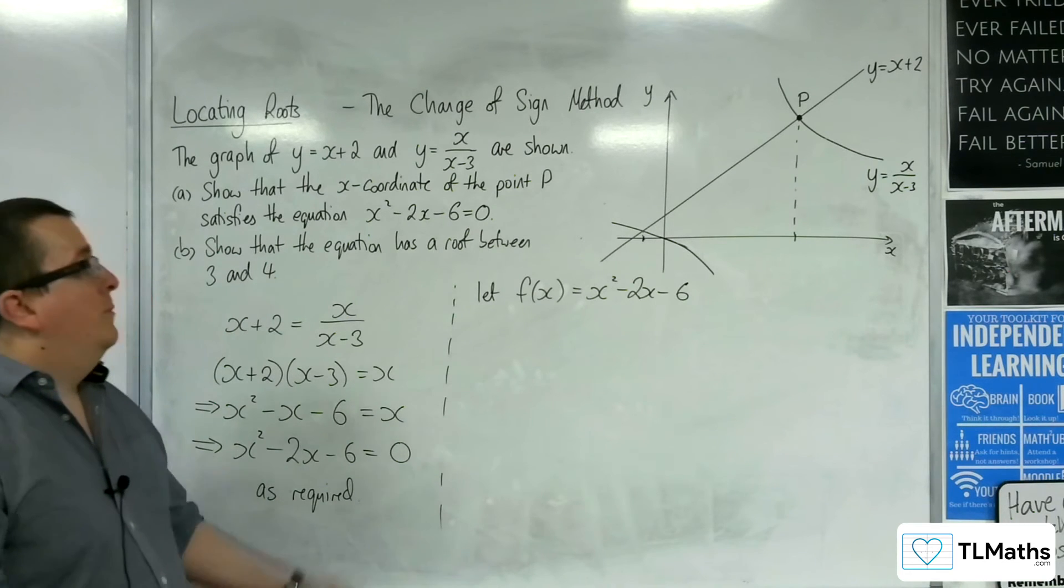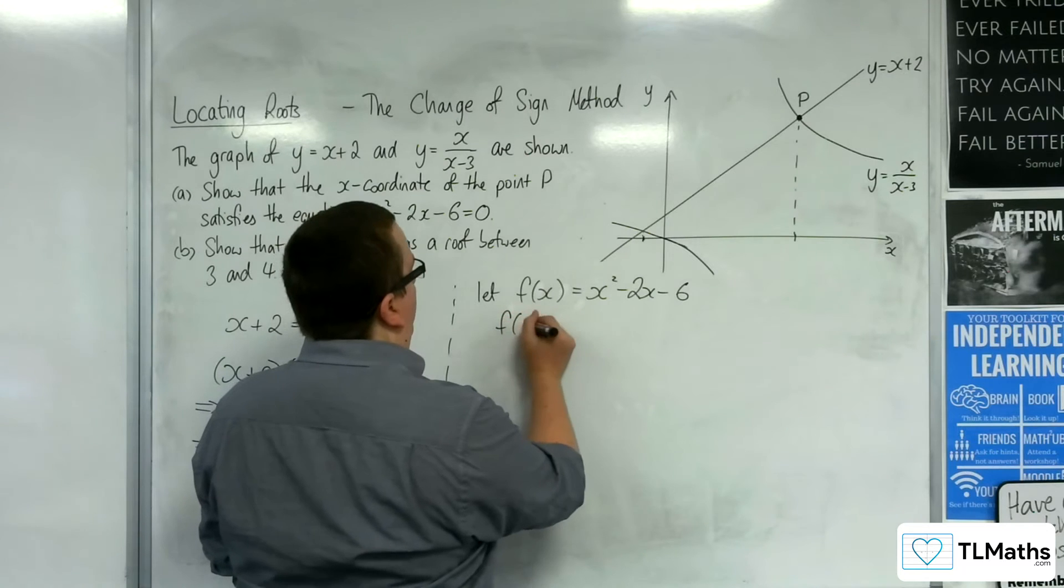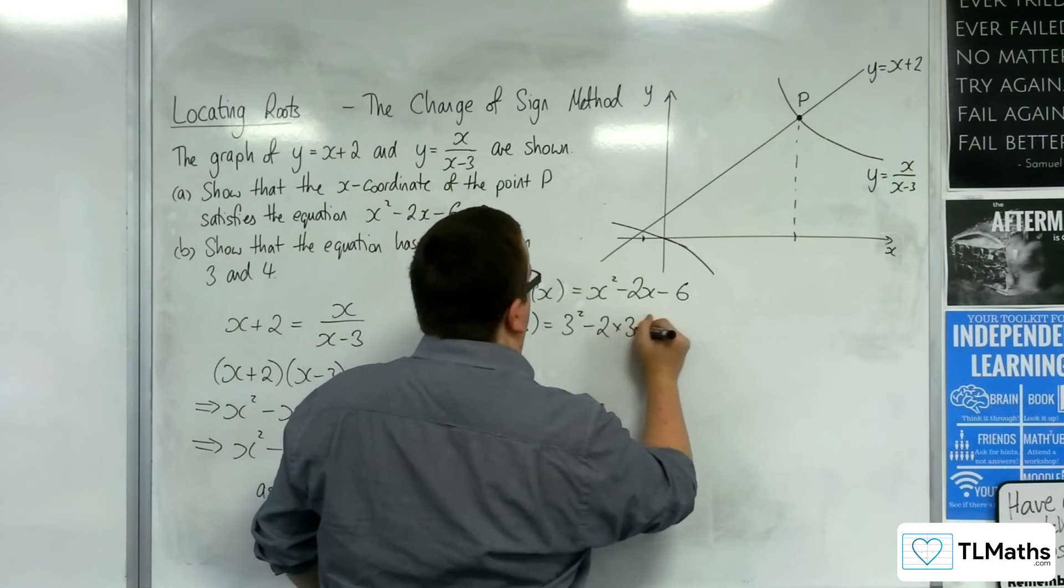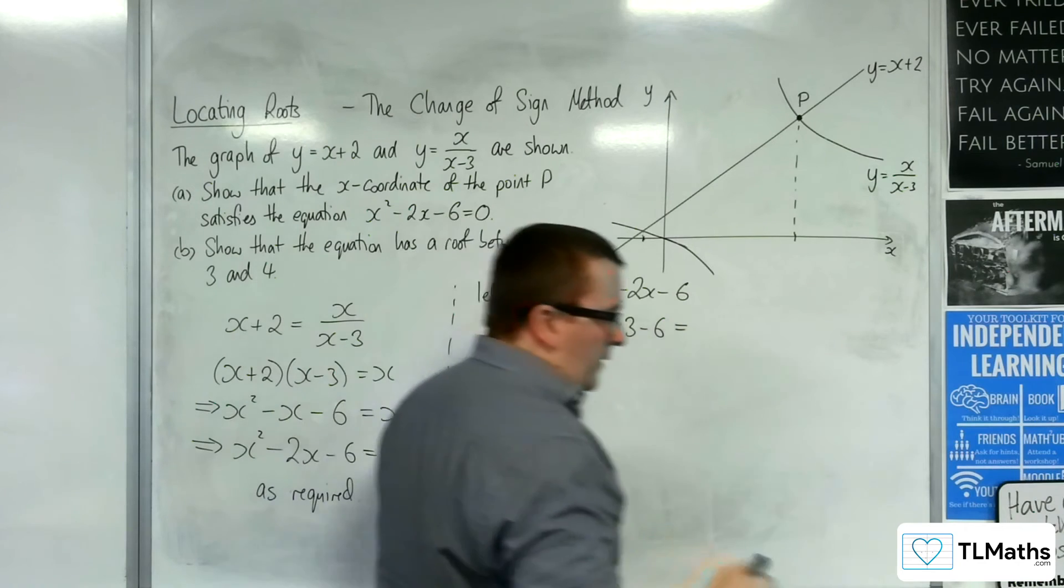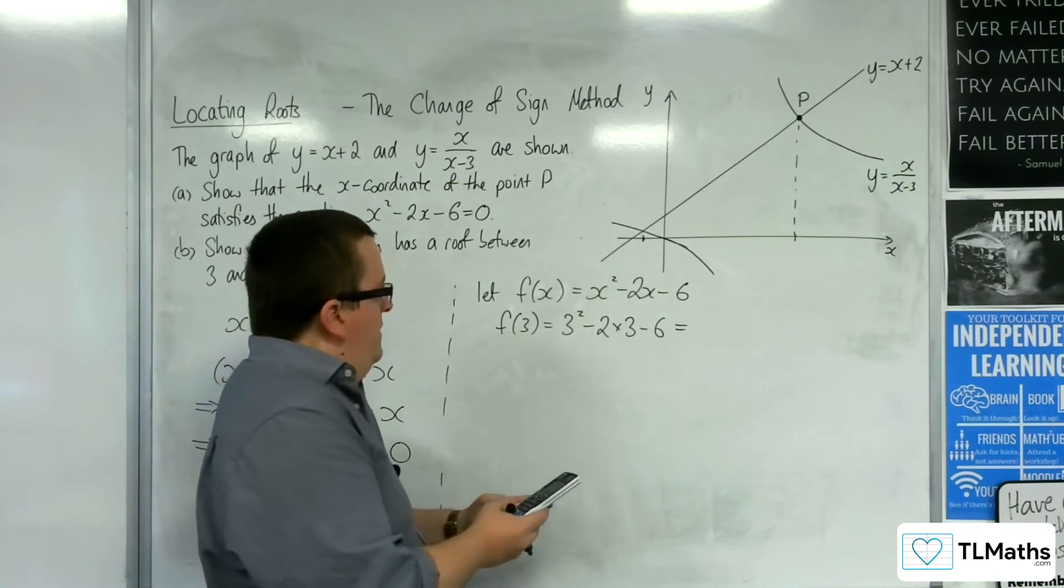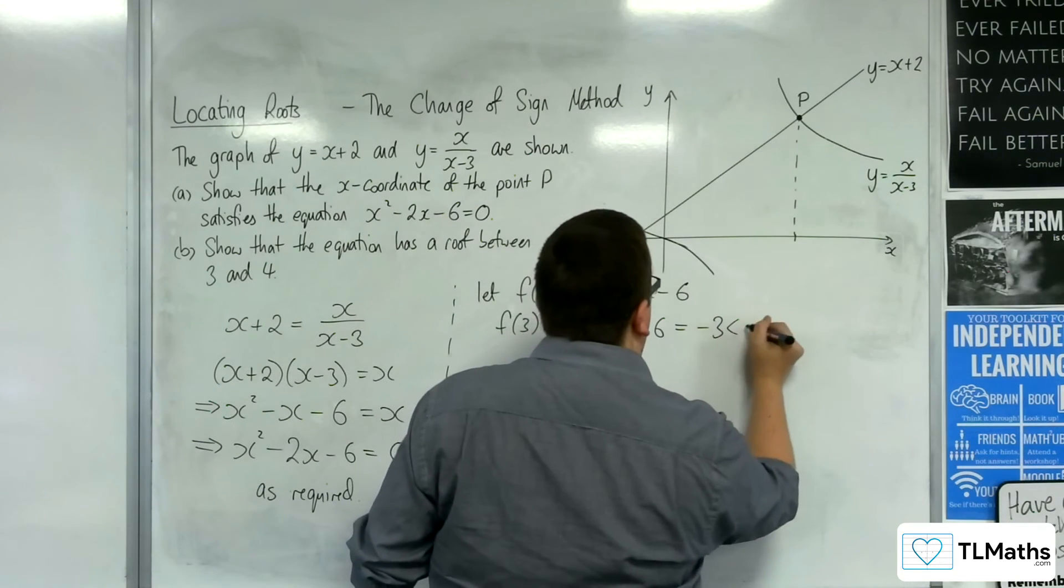And then I'm going to have to substitute in 3 and 4. So f(3) is 3² - 2 lots of 3, take away 6. What have we got there? We've got 9, take 6, take 6, so minus 3. So that's negative.